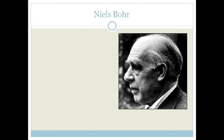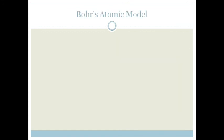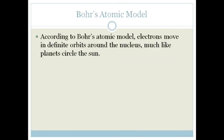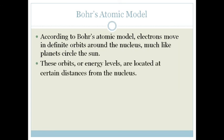Now we get to Niels Bohr. And Niels Bohr was a very different man. He published his work in 1913. He was a Danish scientist, and he proposed a new model. So he did base his model on the previous findings, but he came up with a new theory. And his atomic model says this. According to his model, electrons move in definite orbits around the nucleus, much like the planets circle the sun. These orbits or energy levels are located at different or certain distances from the nucleus.